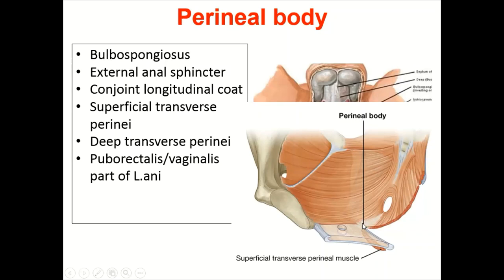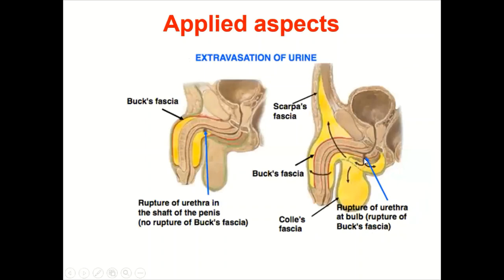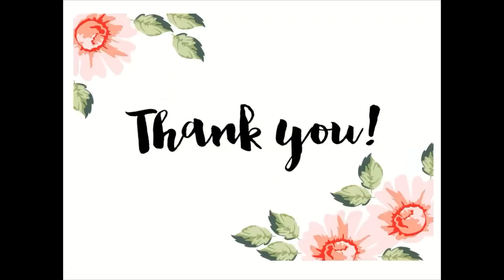Applied aspects: during episiotomy, care must be taken because if the perineal body is torn, it can lead to prolapse of structures like the bladder, rectum, or uterus in females. Additionally, urethral rupture in this region leads to extravasation of urine, causing swelling in the infraumbilical part of the anterior abdominal wall, penis, and scrotum. Please revise your books and feel free to approach with any doubts. Thank you and have a nice day.